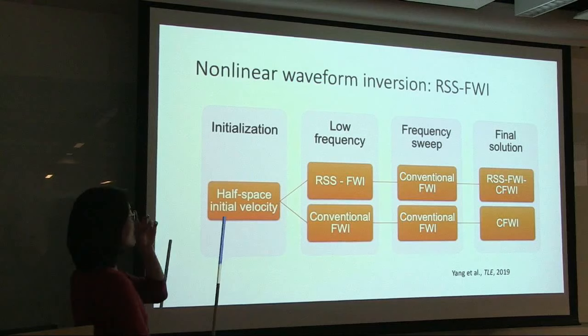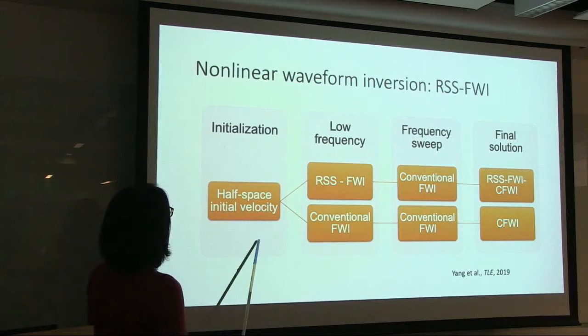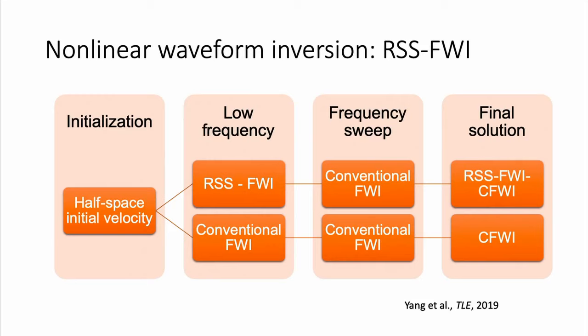Let me show you the numerical examples. My strategy is to start aggressively from a half-space model — as far as possible from the true model. At low frequencies, I compare two strategies: conventional FWI and our Random Space Shift (RSS) FWI. The result of this low-frequency inversion becomes the initial model for a conventional frequency sweep from lowest to highest frequency. Long acronyms will label the results — it should be obvious which method is ours.